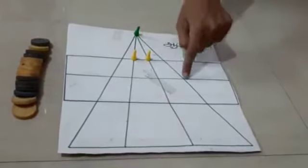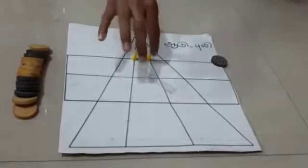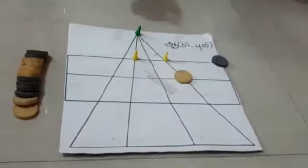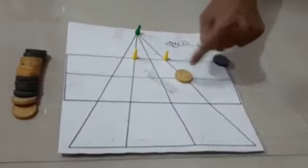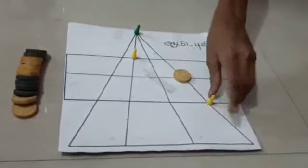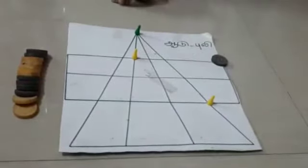First, the goat places it here. Next, the tiger moves his coins. Now, the tiger can eat this goat because there is an empty space behind the goat. So, this coin, the goat, then belongs to the tiger.